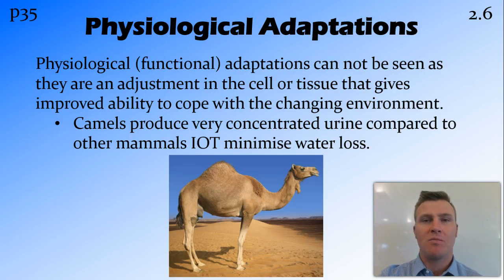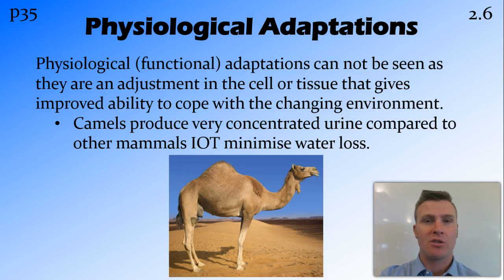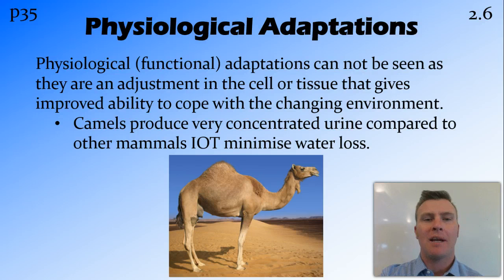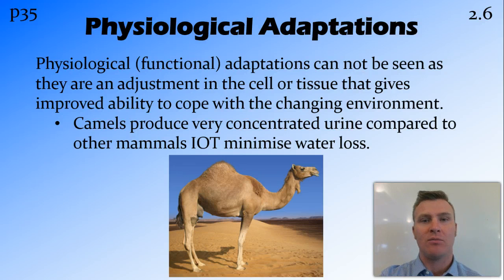An example of this would be camels. Camels live out in the desert where there's not very much water, so they've evolved to conserve water by producing very concentrated urine. You wouldn't be able to cut open the kidneys of a camel and point to it, because it's how those structures actually work and operate down at that cellular level.